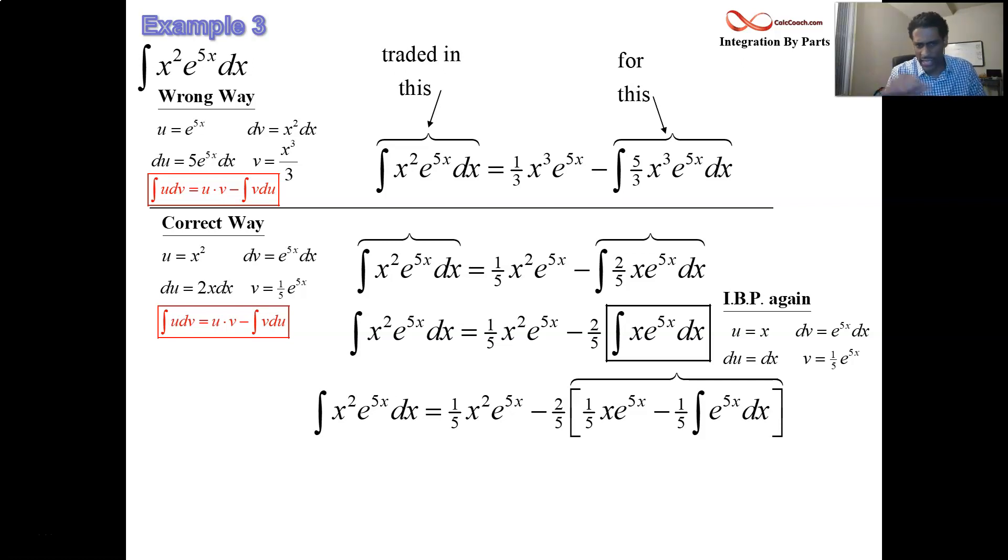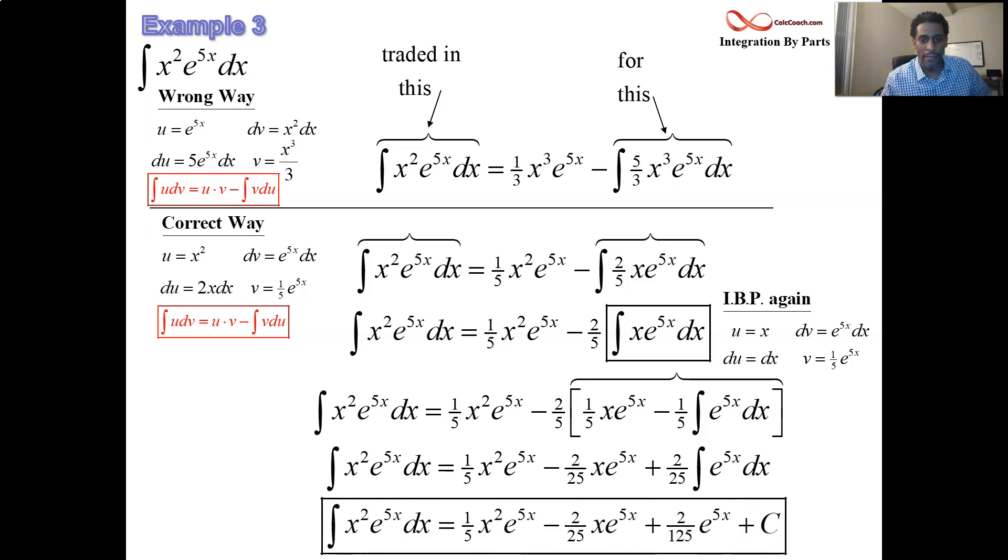At this point, it's probably best to put that minus 2 fifths on inside and get minus 2 over 25 and plus 2 over 25 times the integral. And that's an integral that we can just do, right? The integral of e to the 5x is 1 fifth e to the 5x. So the 2 over 25 times another 1 fifth gives us 2 over 125 e to the 5x. Okay? We have the original uv. We have the second uv. And now the simpler integral. And now plus c. We did it. But it took a while.